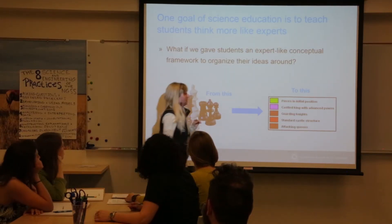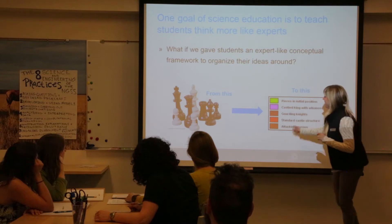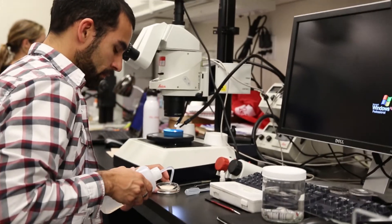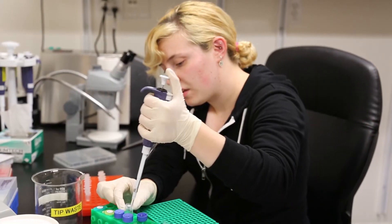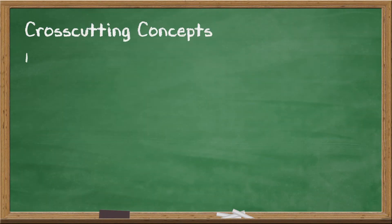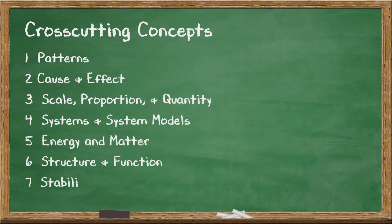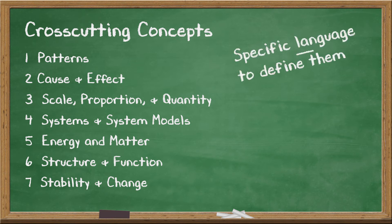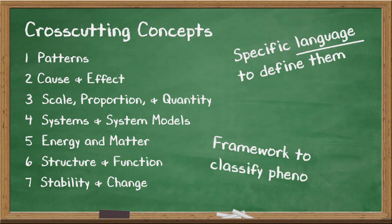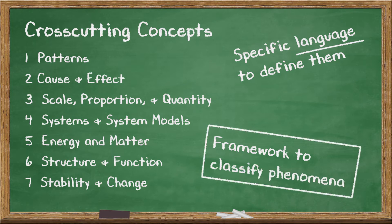The CCCs directly provide this framework. They're consistent across the K-12 curriculum and into how science is practiced in today's laboratories and universities. At the end of these two activities, participants should know that there are seven CCCs, that the NGSS uses specific language to define them, and that they can be used as a framework to classify phenomena.